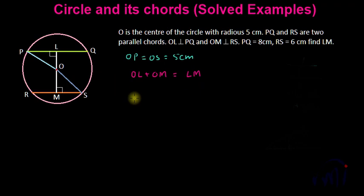OL is a part of triangle OLP where angle OLP is equal to 90 degrees. So we can use Pythagoras theorem. OP is 5 centimeters. OS is also 5 centimeters. PQ total is 8 centimeters. So PL is 4 centimeters and LQ is also 4 centimeters because a perpendicular from the center to any chord bisects the chord. And we are also given that RS is 6 centimeters. That means RM is 3 centimeters and MS is 3 centimeters.